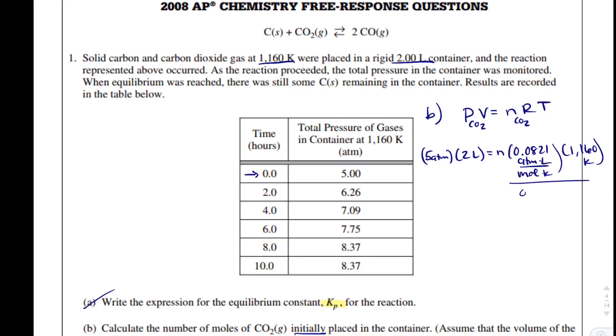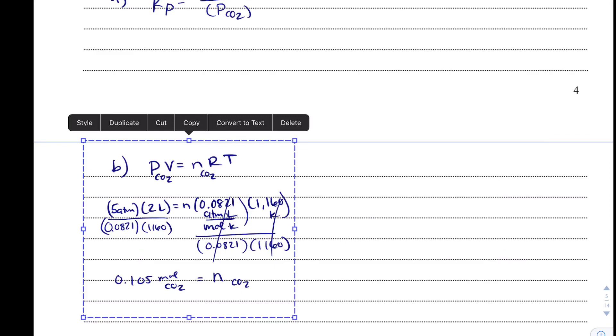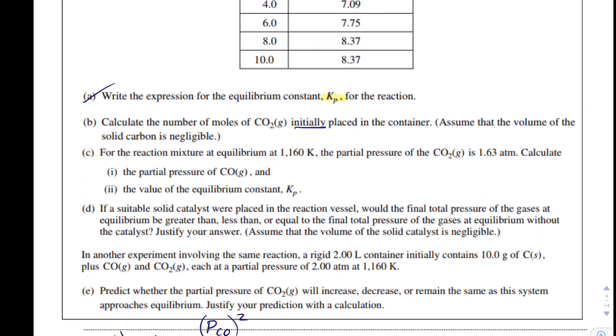And I'm going to divide over 0.0821, and I'm going to divide over 1,160. And my n, or my moles of CO2, when I do that, we never expect a lot of moles, but 0.105 moles of CO2 is what I get. So I'm going to take that and just move it down on my lines. Okay, so we've done part B.